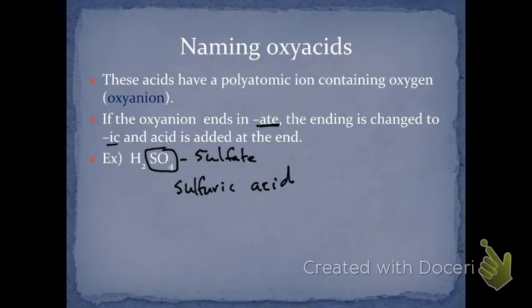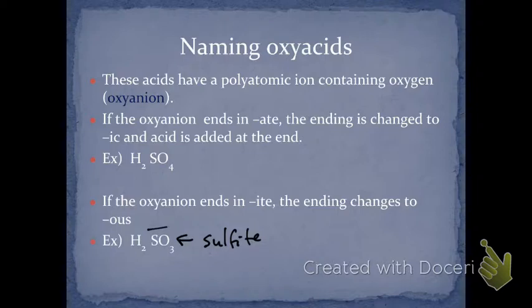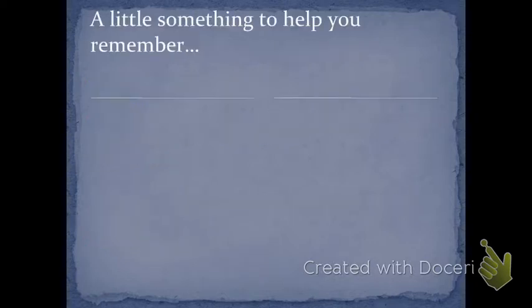And then let's go to the next one. If an oxyanion ends in ite, the ending changes to ous. So this is sulfite, so we would call this sulfurous acid. Change the ite, also notice you add like the sulfur part to it. Okay, so this is sulfurous acid.